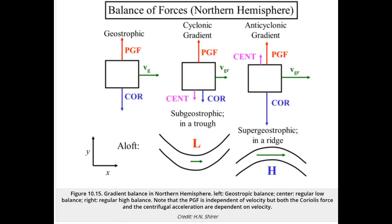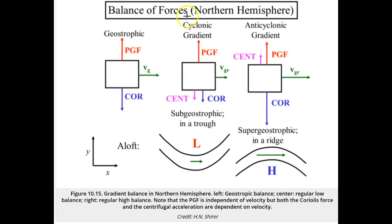For gradient wind balance, the pressure gradient force, Coriolis force, and horizontal centripetal force are all about equal. The two physical cases are shown for the northern hemisphere in the figure, along with the geostrophic balance.